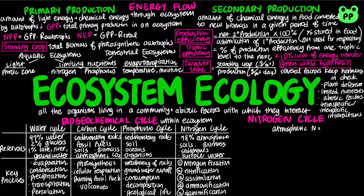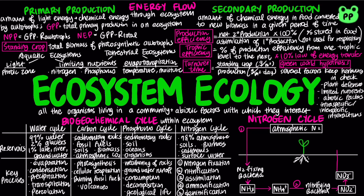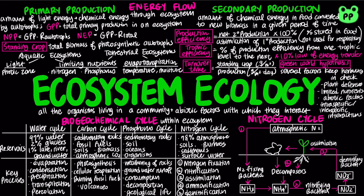Nitrogen in the atmosphere is typically unusable by most organisms. First, nitrogen-fixing bacteria converts nitrogen to ammonia, which is then converted to ammonium. Next, nitrifying bacteria converts ammonium to nitrite and then to nitrate. Ammonia and nitrate are then assimilated by most living organisms as nutrients. Decomposers degrade organic nitrogen back to ammonium, and denitrifying bacteria convert nitrite back to atmospheric nitrogen, completing the nitrogen cycle.